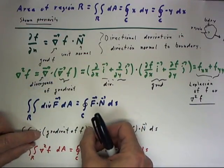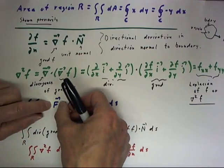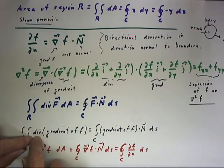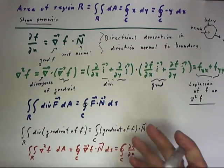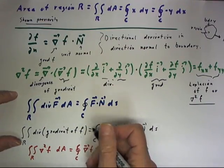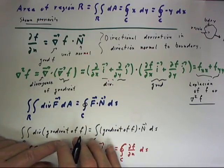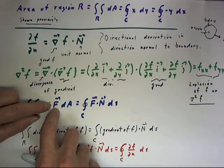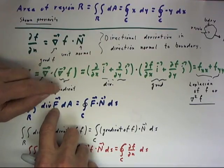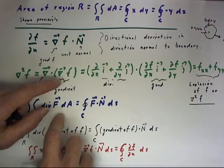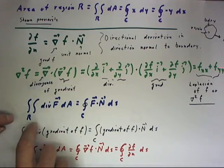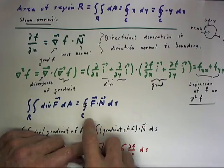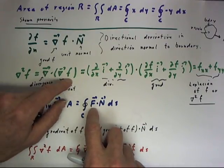If instead of the vector field F we use the gradient of a scalar function little f — that is, we let our big F field be del f of our little f — then we can write that the integral over the region of the divergence of the gradient field, with respect to area, equals the integral over c of the gradient field dotted with n.